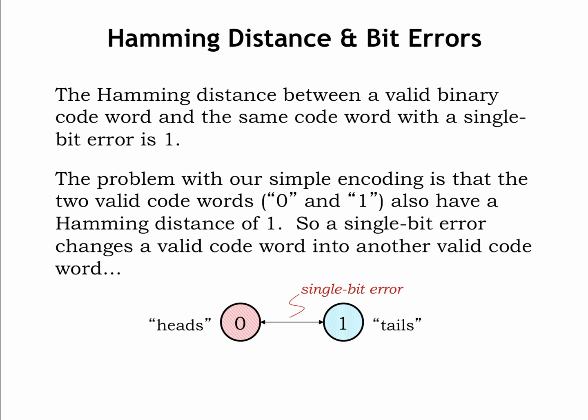The real issue here is that when Alice receives a 1, she can't distinguish between an uncorrupted encoding of tails and a corrupted encoding of heads. She can't detect that an error has occurred.